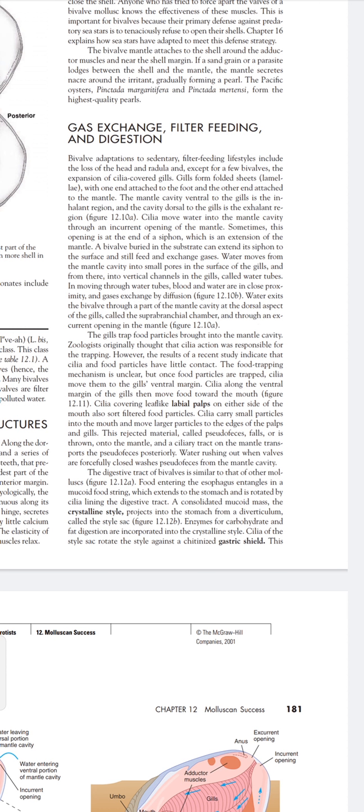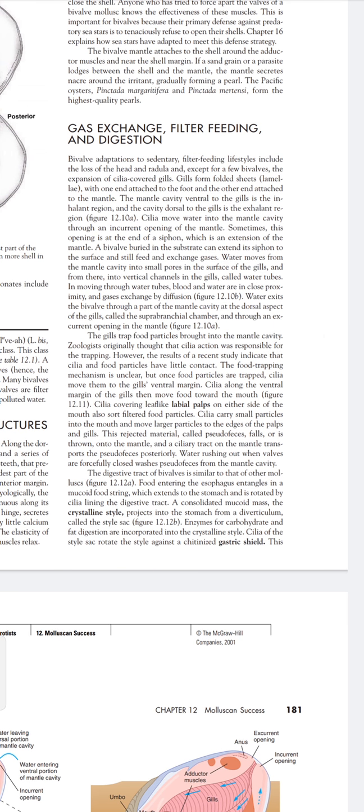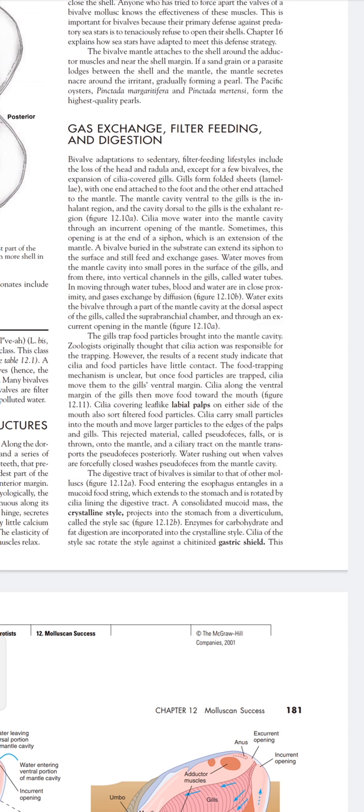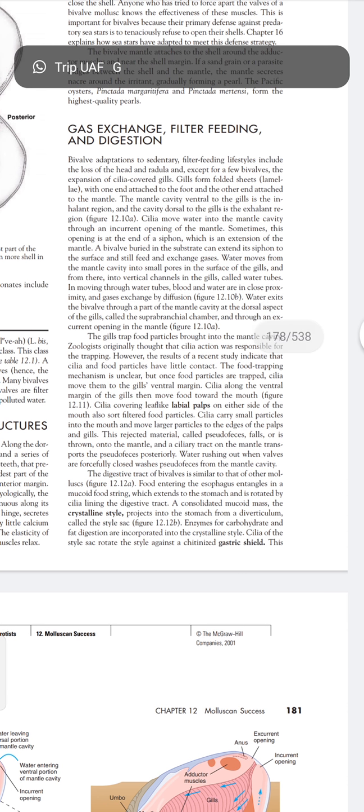The stomach has a cutinous gastric shield. Cilia of the style sac rotate the style against the gastric shield. The friction and acidic conditions in the stomach release the enzymes from the crystalline style. The crystalline style rotates and therefore the mucoid food string winds around it. As it rotates, it pulls the food string into the stomach from the esophagus. The action and acidic pH in the stomach remove food particles from the food string. The acidic pH of the stomach helps remove the food string, and further process separates fine particles from the indigestible materials. This is about the stomach.